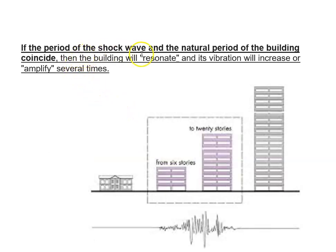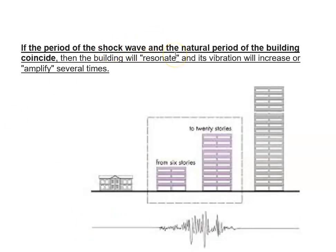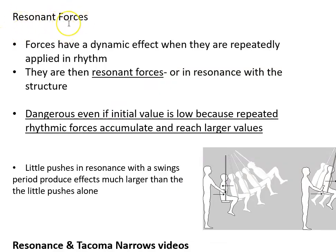If the period of the shock wave and the natural period of the building coincide, then the buildings will resonate and their vibration will increase or amplify several times. So these things have a natural period where they rock back and forth, and the shock wave also has a kind of a period. When the two of them coincide, things are amplified and it becomes problematic — what we call resonant forces. Forces have a dynamic effect when they are repeatedly applied in rhythm; they are then resonant forces, or in resonance with the structure. They are dangerous even if the initial value is low, because repeated rhythmic forces accumulate and reach much larger values.